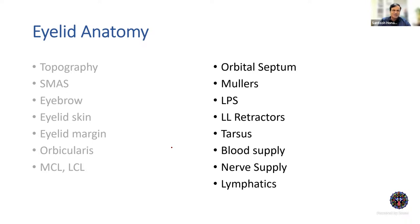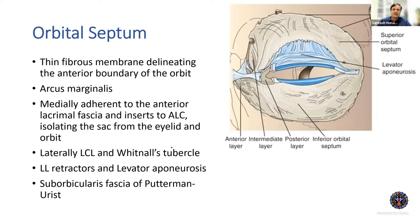Orbital septum is a thin connective tissue membrane separating the eyelid from the rest of the orbit. More precisely, it is a thin fibrous membrane delineating the anterior boundary of the orbit — an extension of periorbita — which blends with the levator aponeurosis in the upper eyelid and capsulopalpebral fascia of the inferior rectus in the lower eyelid.